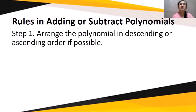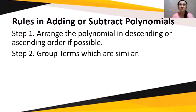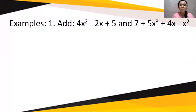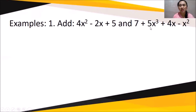We have rules for adding and subtracting polynomials. Step 1: arrange the polynomial in descending or ascending order if possible. Step 2: group terms which are similar, or use the vertical method. Step 3: add or subtract the numerical coefficients applying the rules for integers and copy the literal coefficients. Example — add: 4x² - 2x + 5 and 7 + 5x³ + 4x - x². Arrange in descending order, with 5x³ first, then combine similar terms.